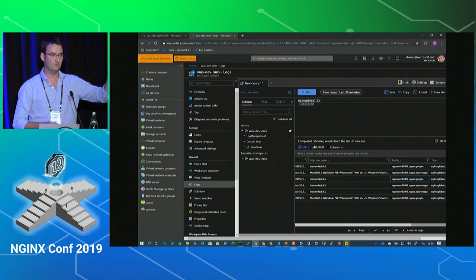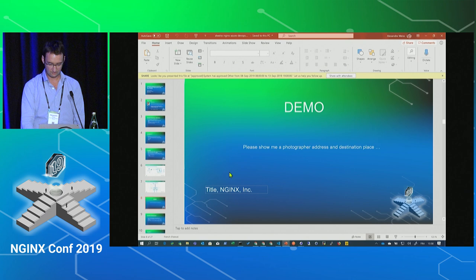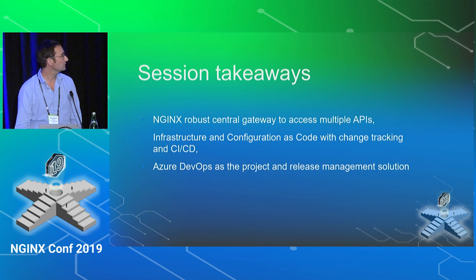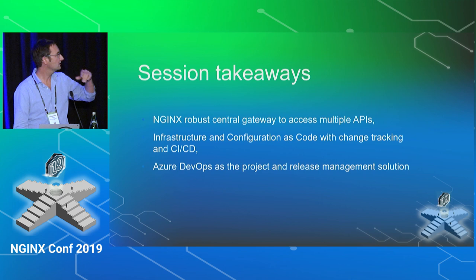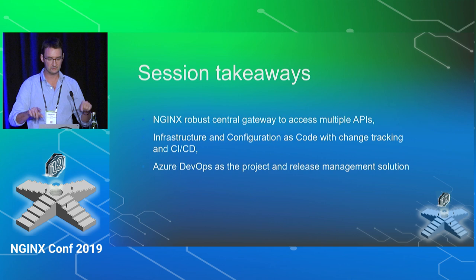I'm at the end of the presentation — just the wrap-up. Session takeaways: Nginx is a robust gateway for multiple APIs. You can do everything as code — infrastructure or configuration — and track all changes because every update to the feature flag requires a commit to the repository, so you have full history, rollbacks, and DevOps as a project and release management solution.